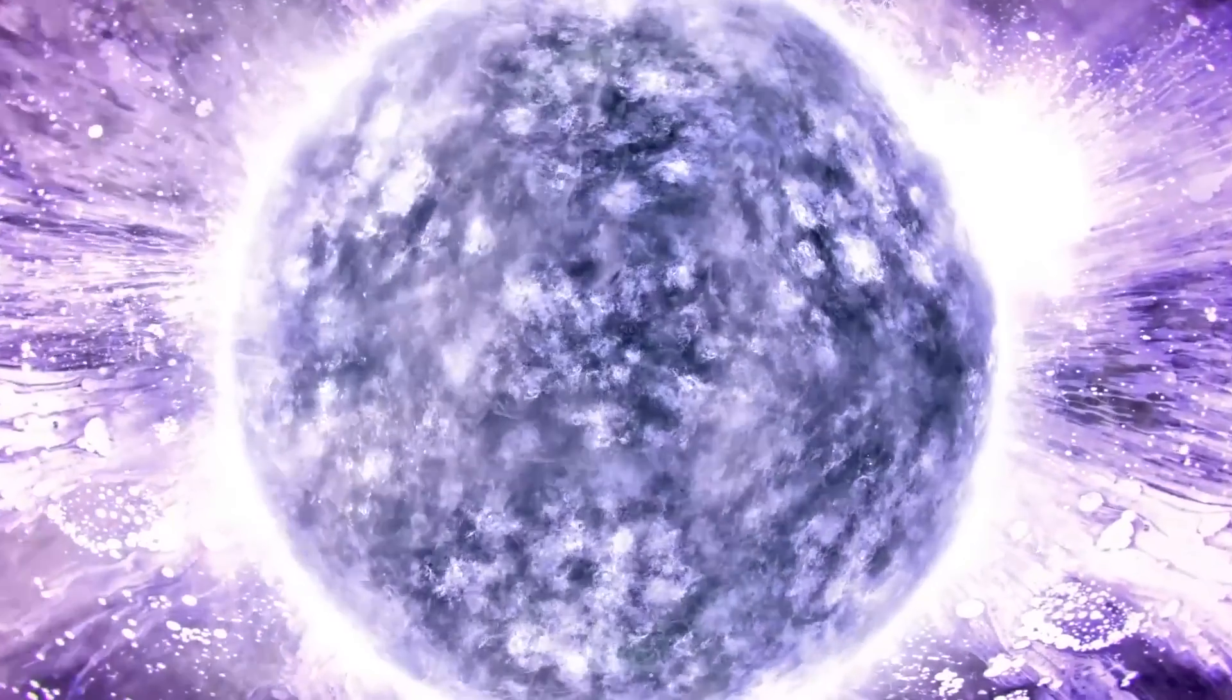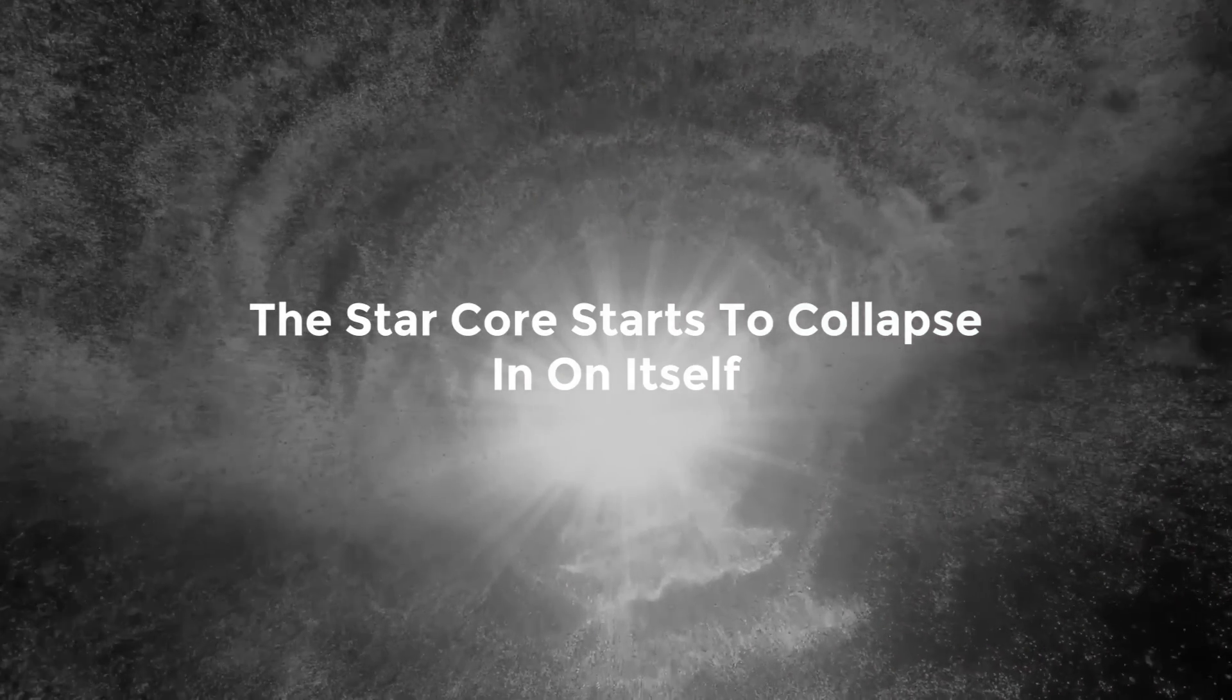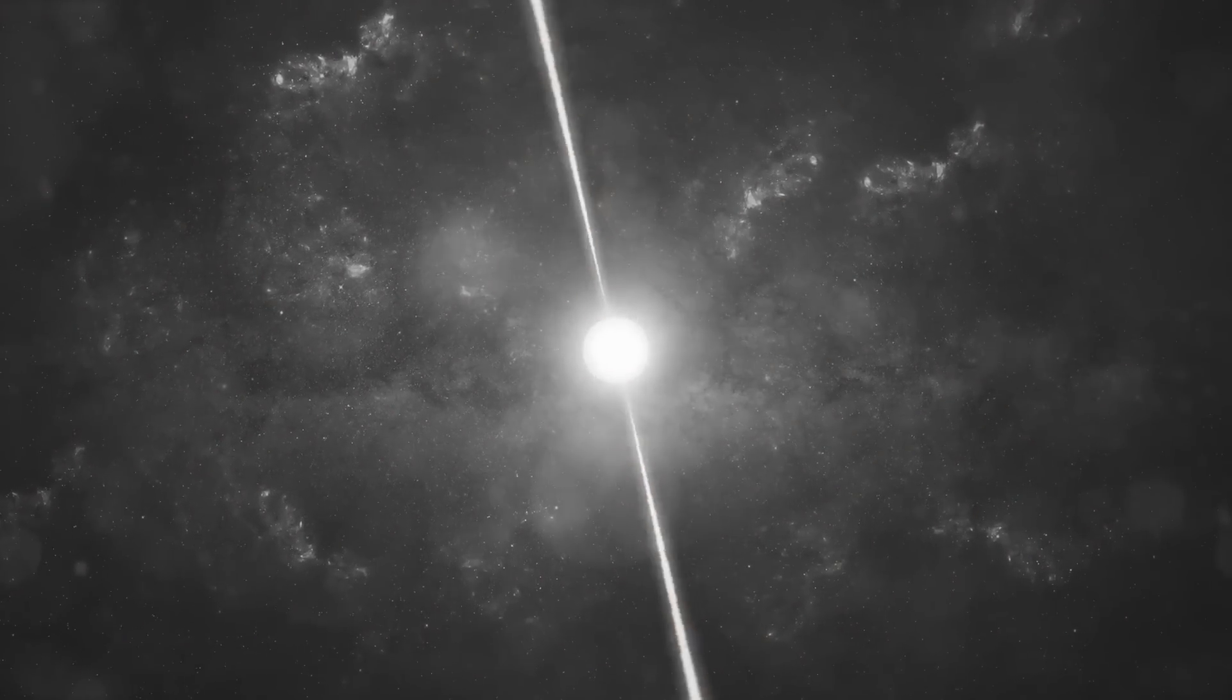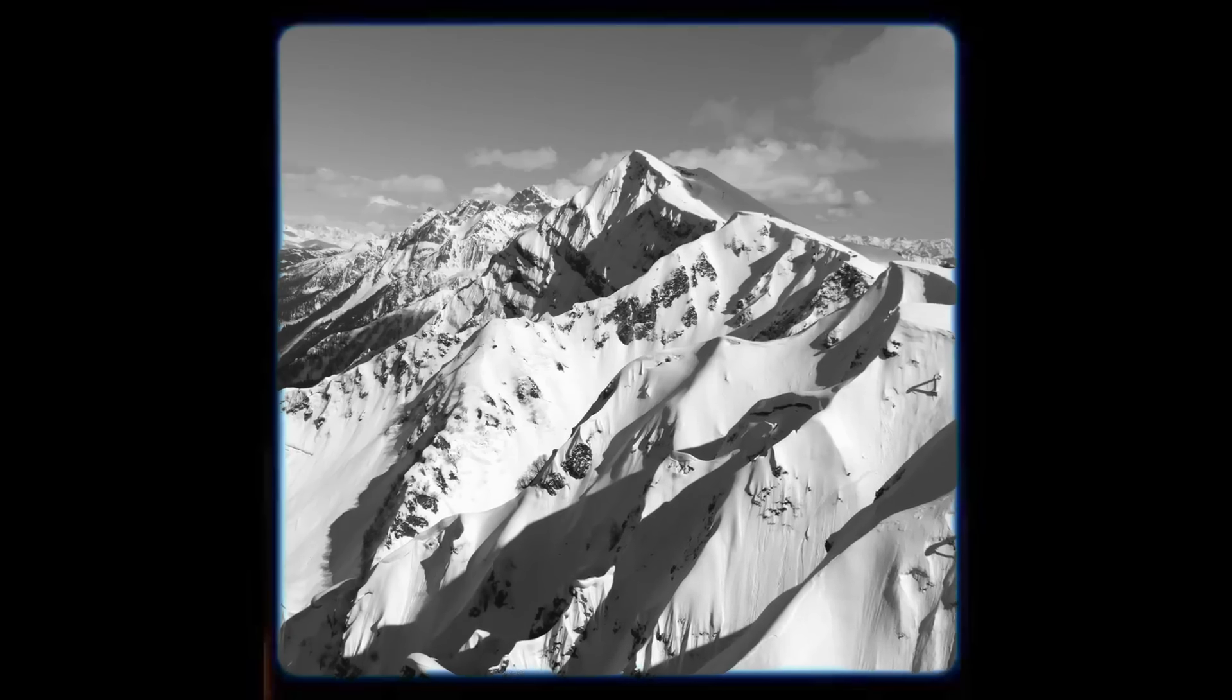But because there are no longer any forces to counteract that gravity, the star core starts to collapse in on itself in the stellar remnants of a supernova. Numerous of these shattered cores develop into neutron stars. Neutron stars are extremely dense, with a single sugar cube weighing as much as a mountain.